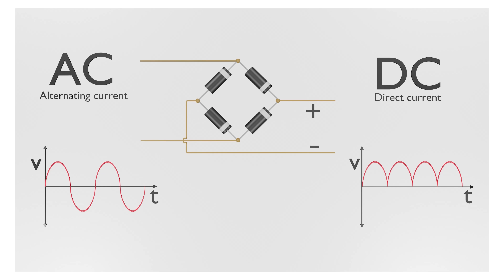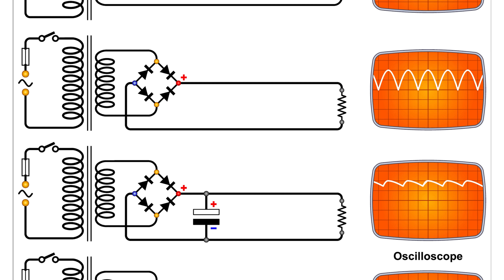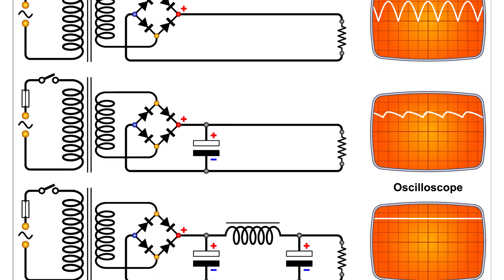Why do we want a circuit component that only allows current to flow in one direction? The main reason is that diodes are used for rectification. When we have an AC voltage, it swings positive then negative very rapidly. But often we want to convert AC electricity to DC electricity. Because diodes only allow current to flow one direction, by connecting them in certain ways in circuits, you can take that AC signal and change it to only flow in one direction. You can then use capacitors to smooth out the voltage and turn it into a DC voltage.